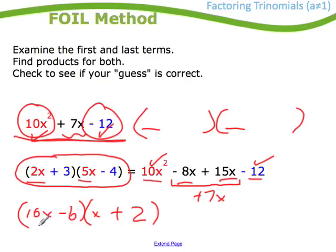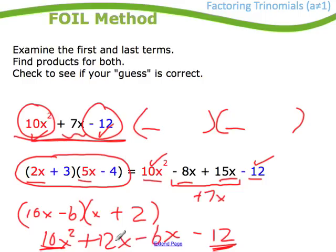Notice if I'd have done it this way, I'd have got 10x squared, of course. Then I'd have plus 12x, minus 6x, and then minus 12. Notice the last term and the first term are correct. But when I go 12 minus 6, I get a plus 6x, not a 7x. Therefore, this way is wrong.